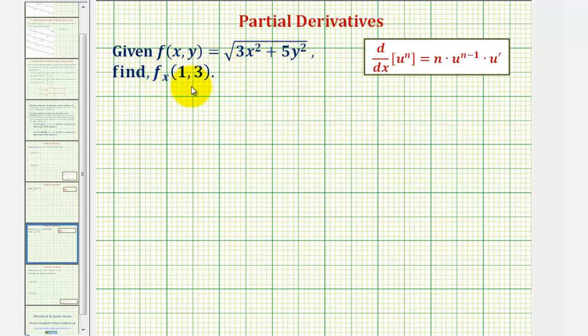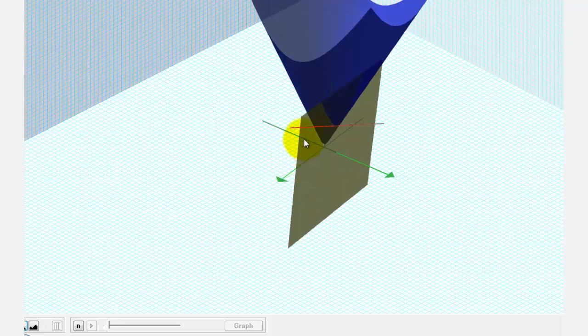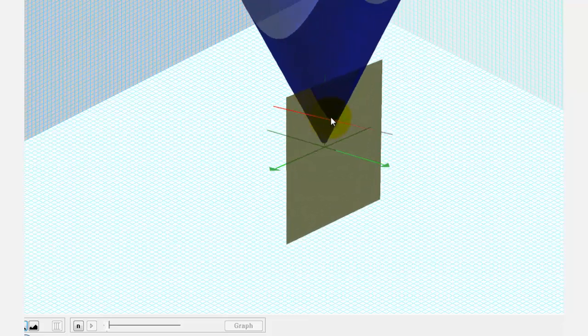Let's take a look at this before we find this value. So here's the graph of the surface, and here's the point on the surface where the x coordinate is 1 and the y coordinate is 3. And this red line is a tangent line in the x direction.